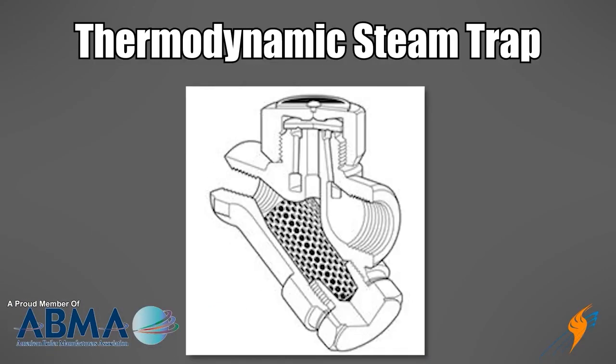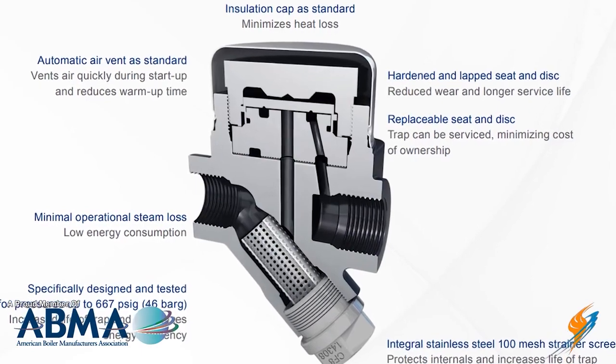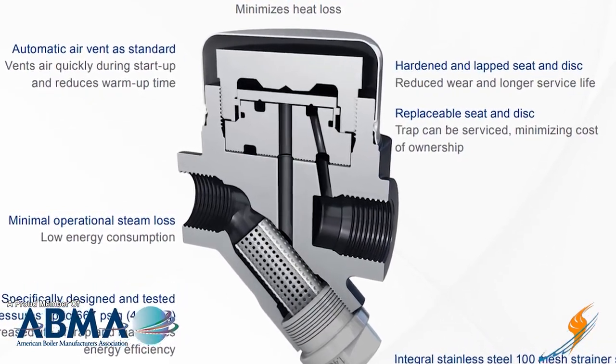So why don't we start with the thermodynamic and talk about what that actually is. It's a relatively small type of trap. It works on a mechanical feature where it utilizes high and low pressure zones, moving a disk up and down. Based on the velocities and the differential of pressures going through this trap, it'll either be stopping the condensate and the steam from flowing, or it'll be releasing it to come back and return.